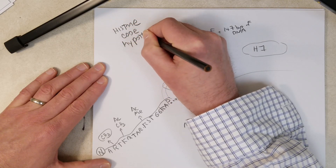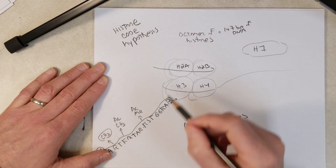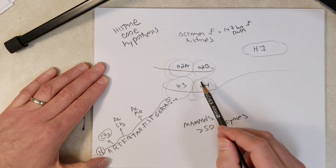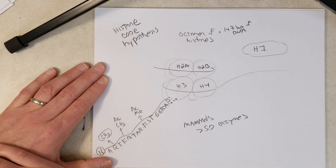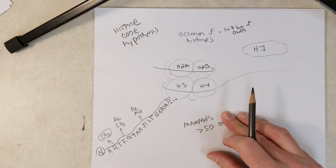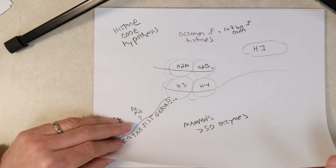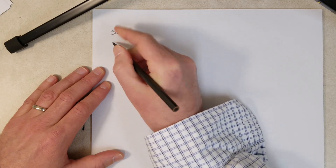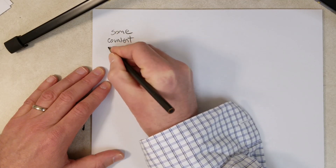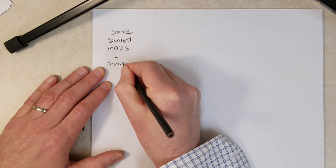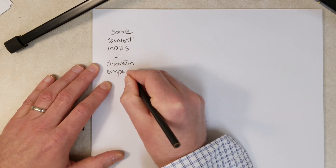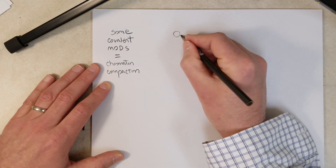The histone code hypothesis holds that covalent modifications of these tails influence the expression of genes associated with the nucleosomes. One of the most popular explanations for how the histone code controls gene expression is that some covalent modifications lead to chromatin compaction.